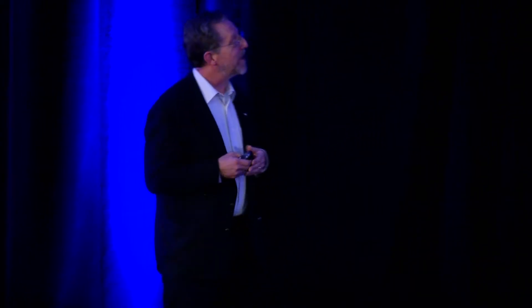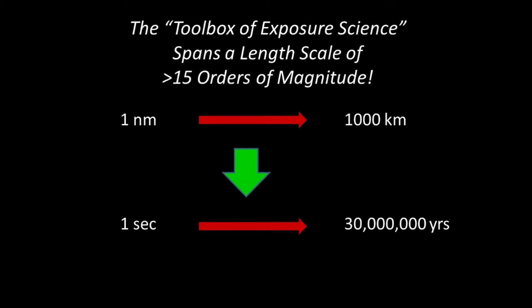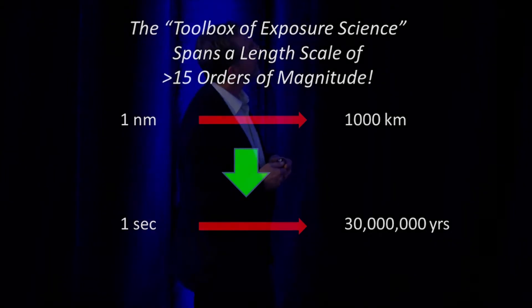So if you think about this, the toolbox that we have available to us now as exposure scientists is pretty impressive. The distance between one nanometer and 1,000 kilometers is 15 orders of magnitude. That's almost infathomable. So I thought I would put it in terms of time. 15 orders of magnitude is one second in 30 million years. I think that drives it home pretty well. An amazing toolbox.